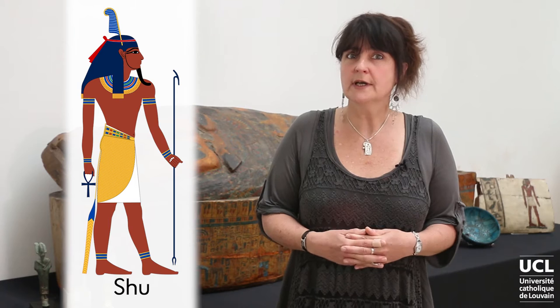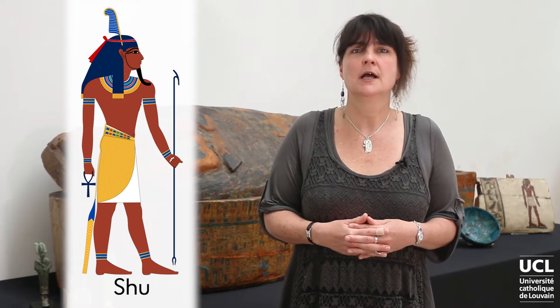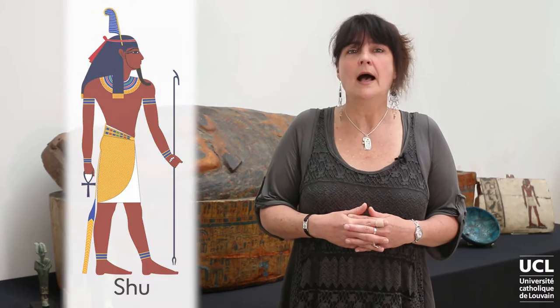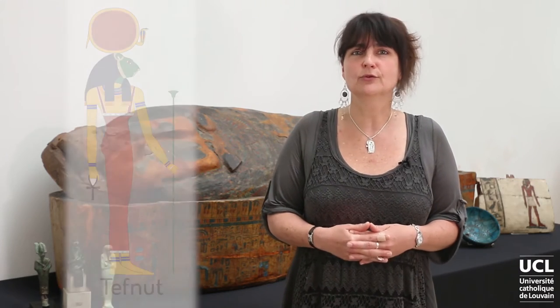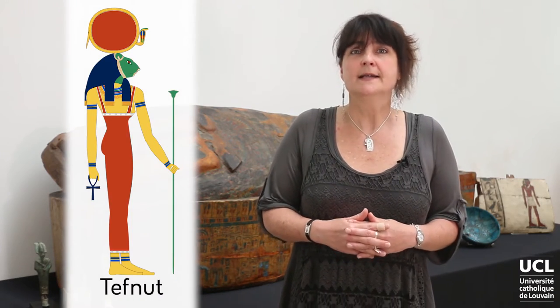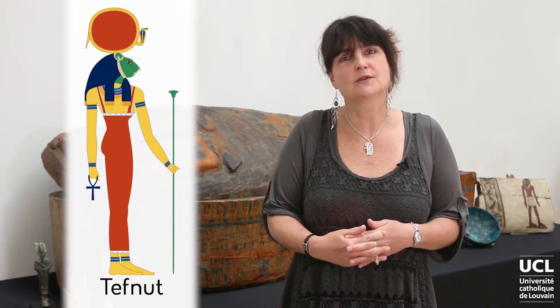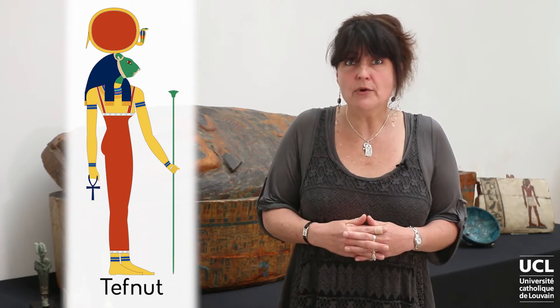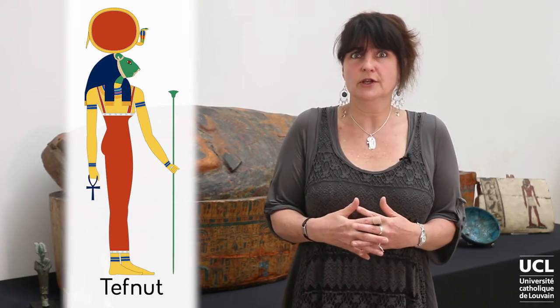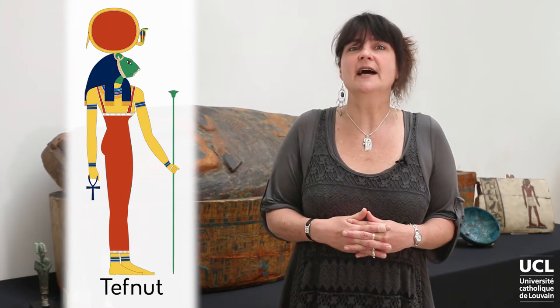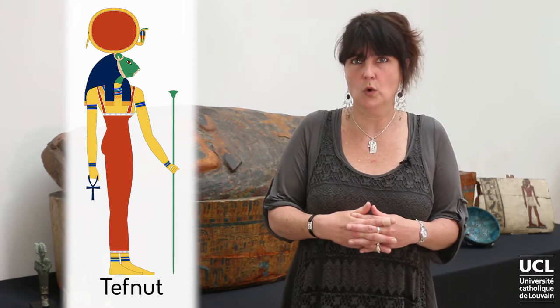The son of Atum, Shu, is the god of the air. His name means emptiness, and he personifies the space that separates the earth from the sky. Atum's daughter is Tefnut, the goddess of moisture, and since she is the daughter of Atum, she is Shu's sister. But she was also married to Shu, so we can describe her as his sister-wife. She represents the atmosphere of the lower world, just as Shu represents the atmosphere of the upper world.